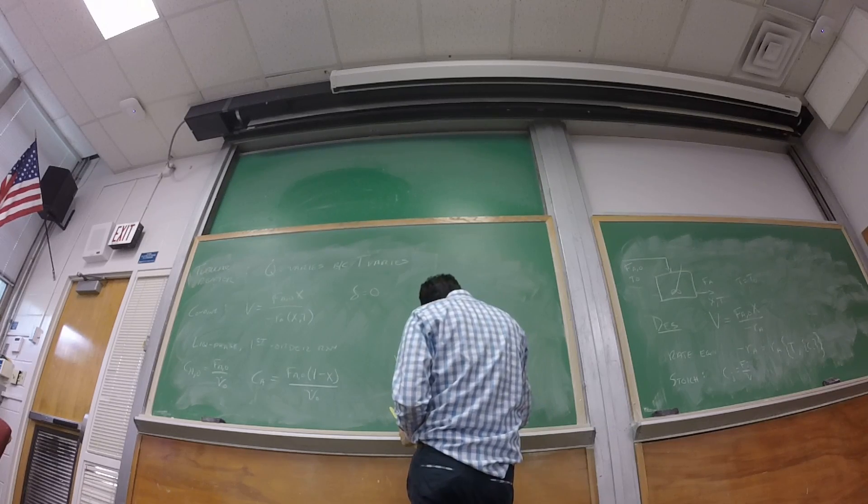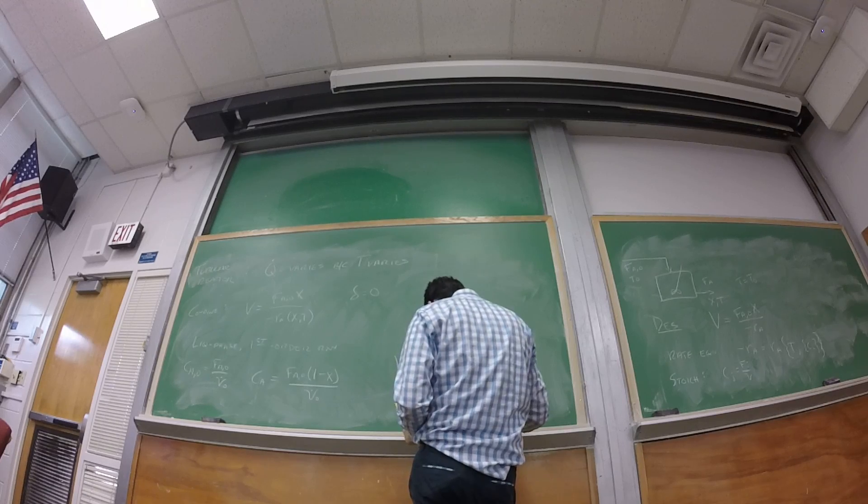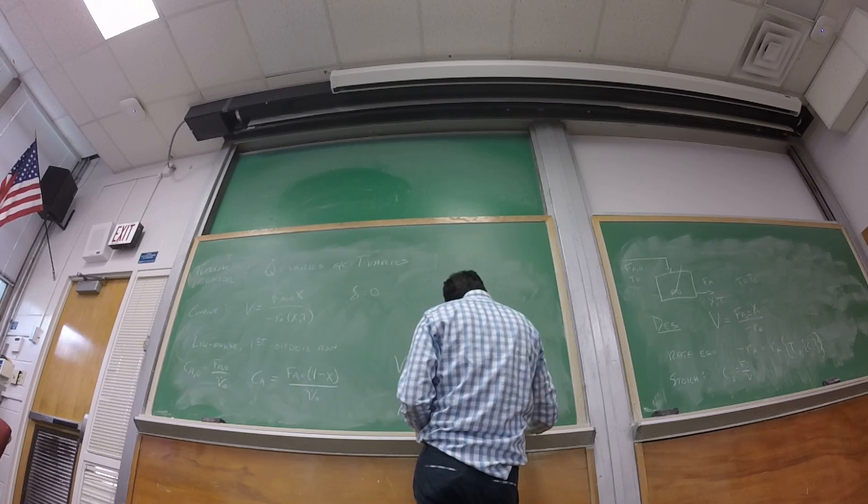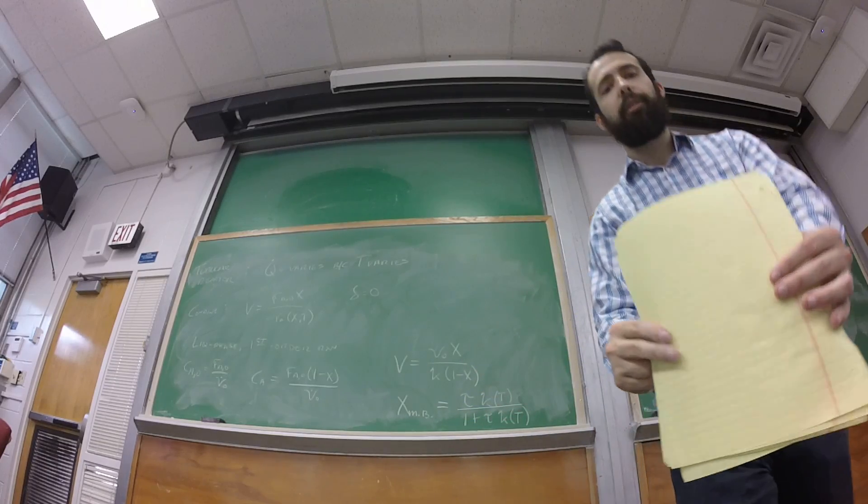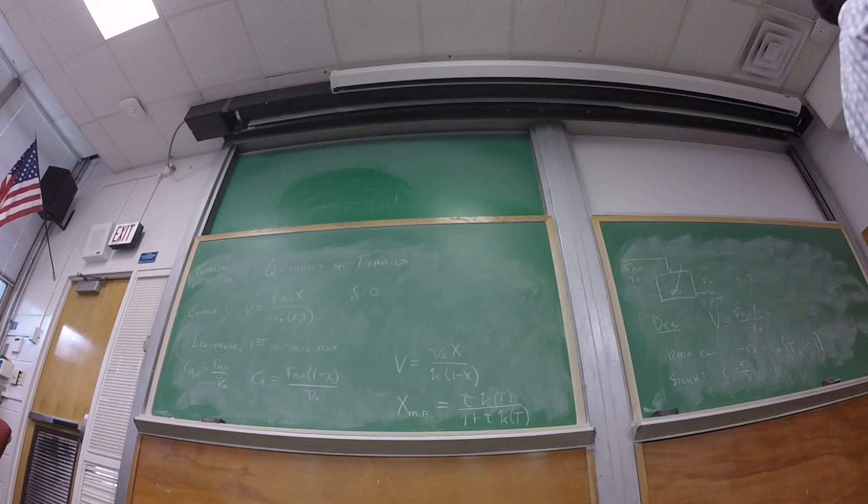So I can write conversion as a function of the residence time and the rate constants and nothing else. Why do I need to write it in terms of rate constants? Right, because that's where the temperature dependence comes from.